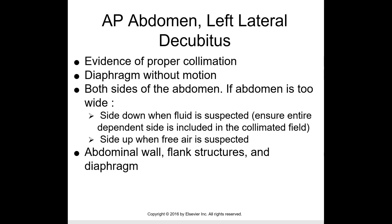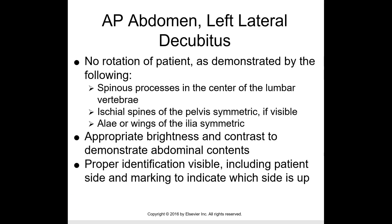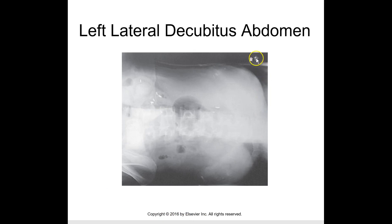No rotation of the patient is demonstrated by the following: spinous processes in the center of the lumbar vertebrae, ischial spines of the pelvis symmetric, and ala or wings of the ileum symmetric. Appropriate brightness and contrast should demonstrate abdominal contents. Proper identification must be visible, including patient side and a marking to indicate which side is up. The most difficult aspect of the decubitus is making sure the patient is straight and not rotated.